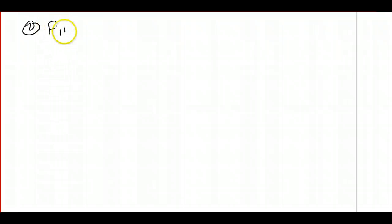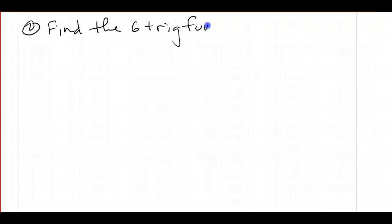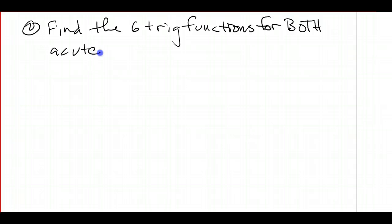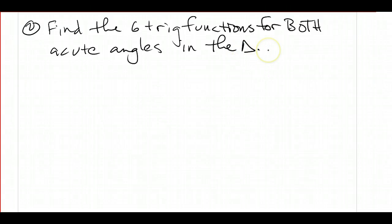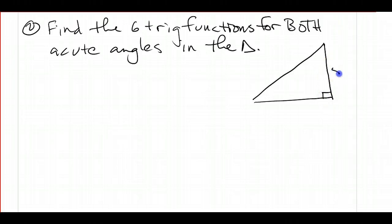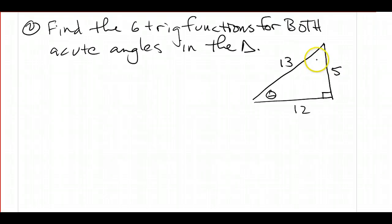What I want to do is find the six trig functions for both acute angles in the triangle. So here's my triangle. This side's 5, this side's 12, this side's 13. And this is going to be my angle theta. So I want to find the trig functions for both acute angles — I've got theta, and then I've got this other angle here, which I'm going to label in a minute.